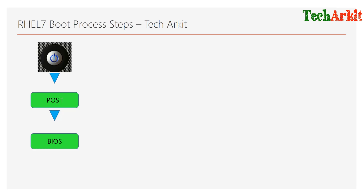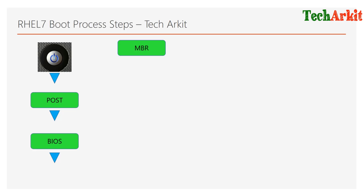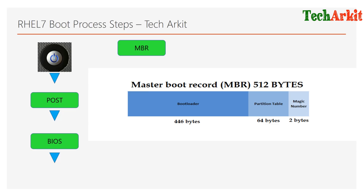Once the hard drive is found, the system looks for the Master Boot Record, which is the MBR. The MBR is located in the first sector of the hard drive itself. When the MBR is read, it identifies the boot information. The MBR size is 512 bytes, and these 512 bytes of boot information will be loaded.